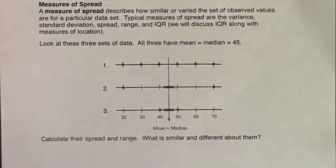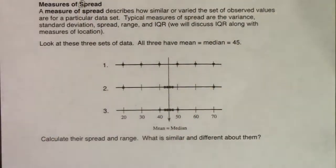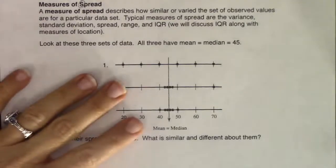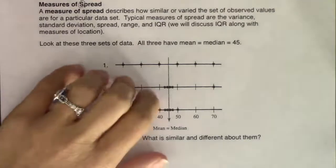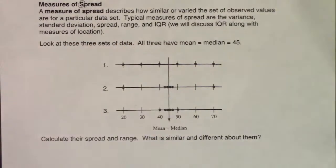We're going to take a look at some more measures of spread. We've talked about a couple of them so far — range and spread itself — but these all fall under that last S in our SOCS. A measure of spread describes how similar or varied the set of observed values are for a particular data set. Typical measures of spread are the variance, standard deviation, spread, range, and IQR.